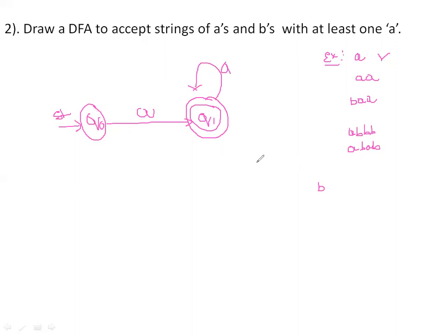After B, only when the machine receives A should it move to the final state. For a string like BB, we don't have at least one A, so it should be rejected — the machine stays in Q0. For BBA: first B stays in Q0, second B stays in Q0, then receiving A moves straight from Q0 to Q1, so BBA is accepted.